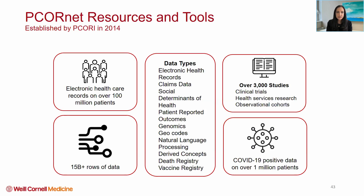PCORnet has electronic health care records on over 100 million patients, represented with 15 billion rows of data. There are many different data types. PCORnet has supported over 3,000 studies and has laboratory-positive COVID-19 data on over 1 million patients as of November 2021. Very importantly, the cornerstone of PCORnet is patient-centeredness. Patients participate in the leadership and governance, in study approval, in designing questions, and in every aspect of the work that is done.